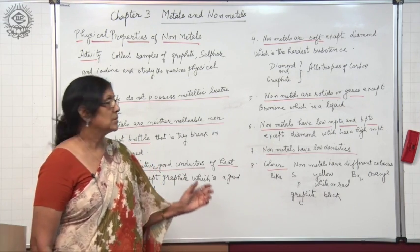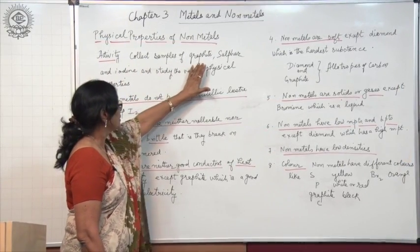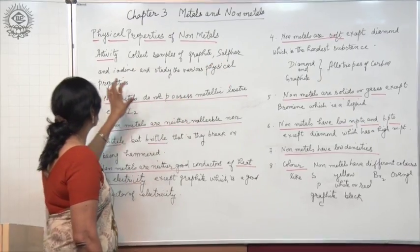Now, as you see, you can collect these non-metals: graphite, sulphur, and iodine.